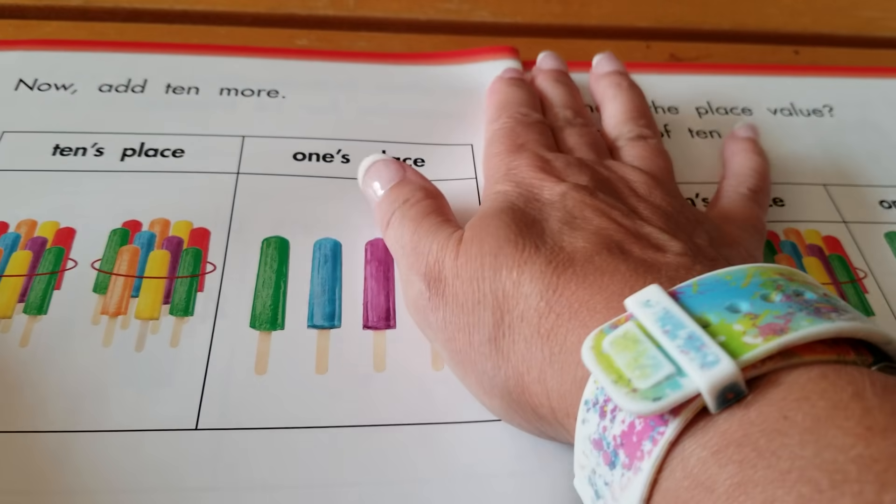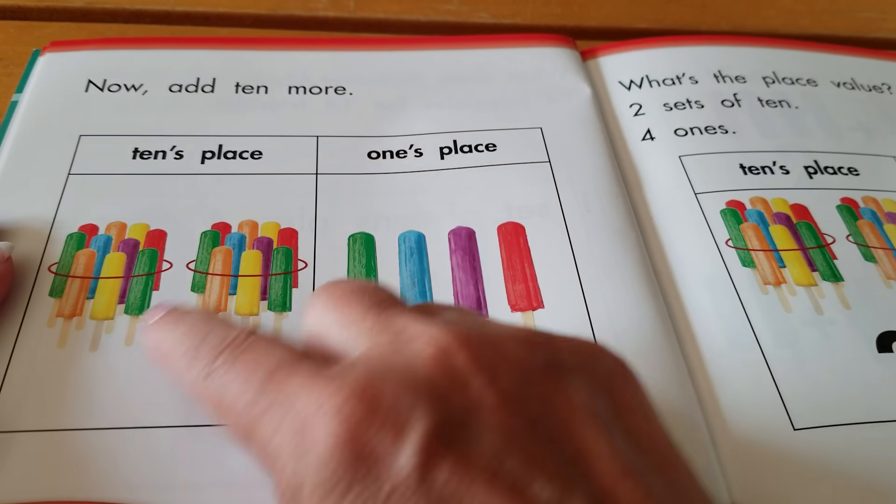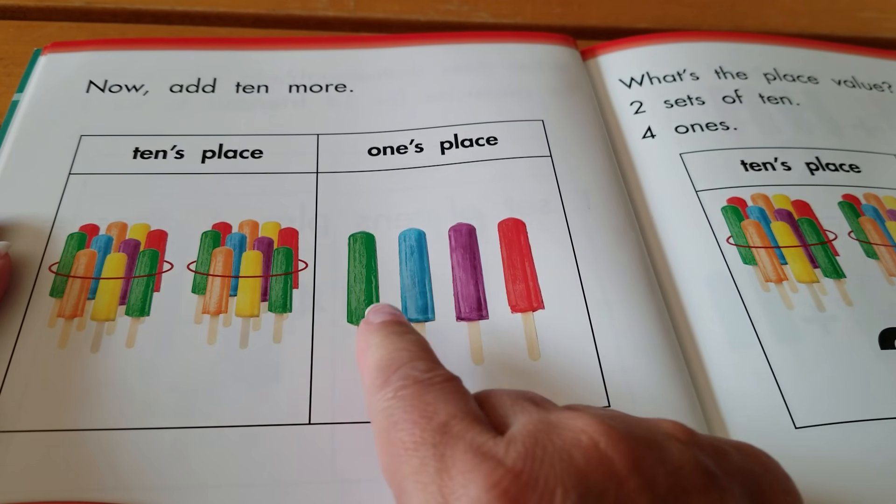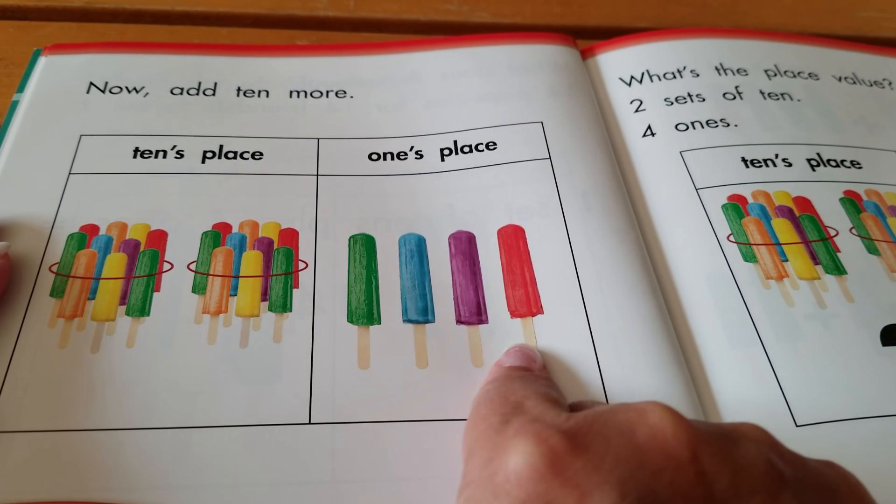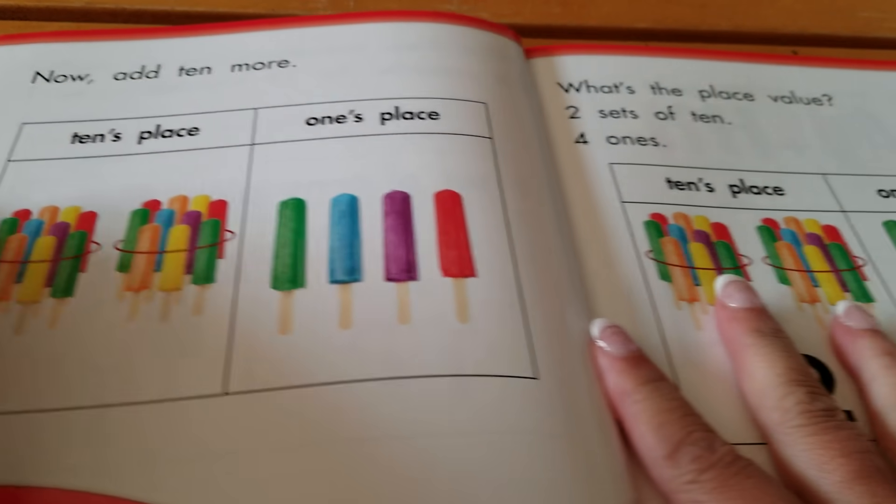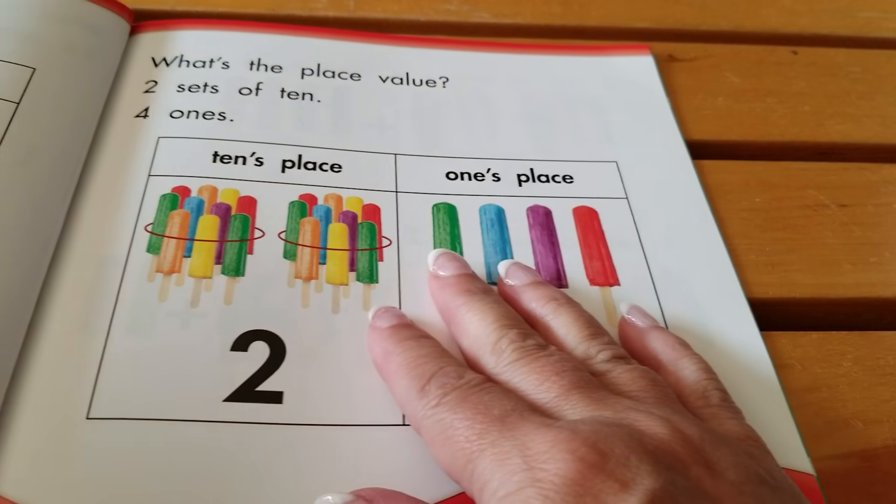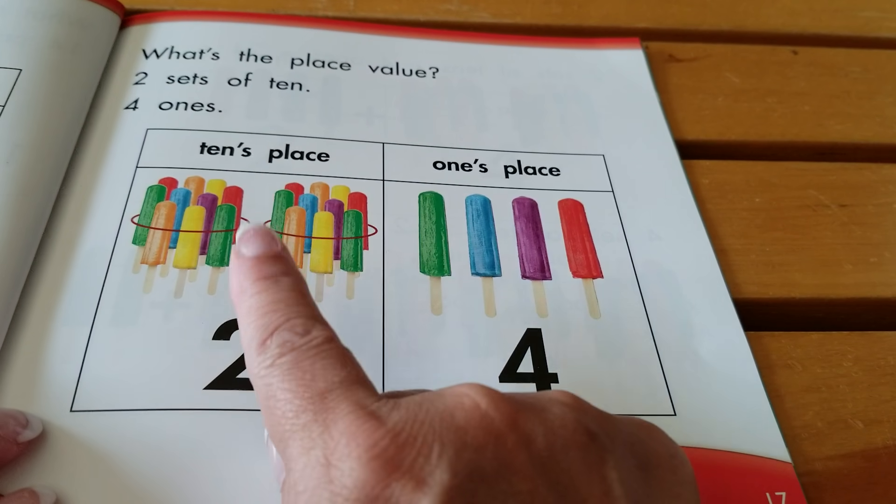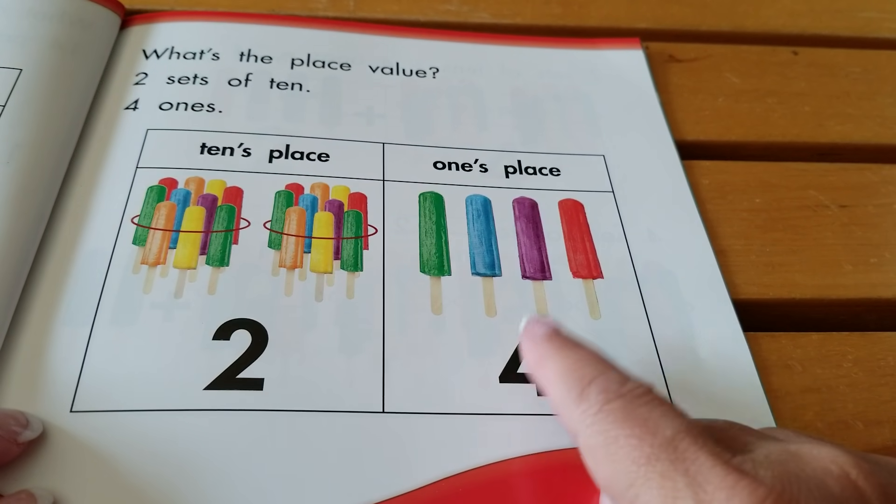Now, add ten more. Two groups of tens and one, two, three, four ones. What's the place value? Two tens, four ones.